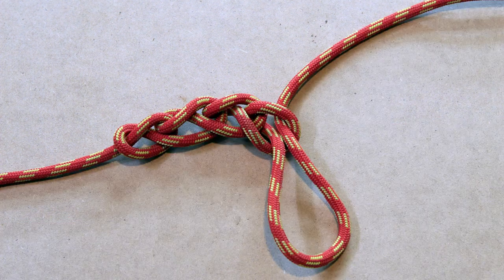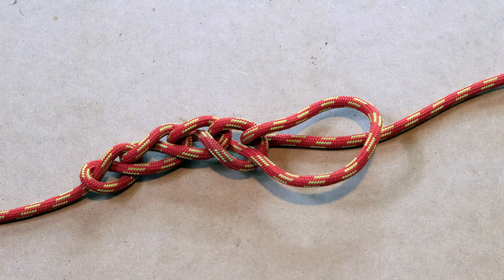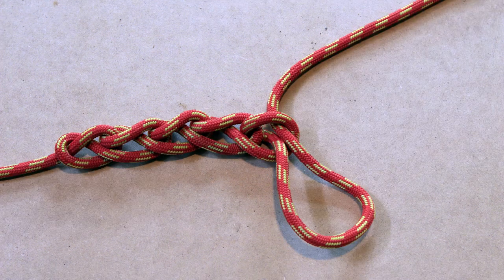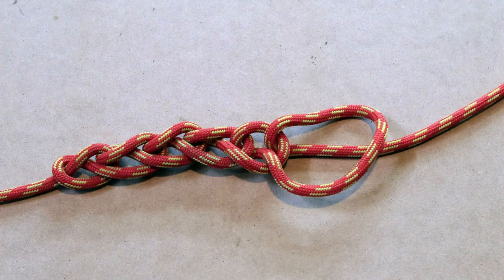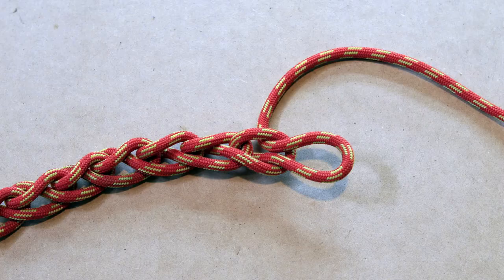From here on, keep repeating this process until you reach the end of the rope. If you want to lock the chain, then simply pull the last bight through. This will prevent the daisy chain from unraveling.